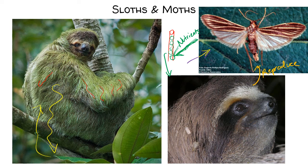The algae get nutrients from the sloth poop and dead moth bodies, the sloth gets nutrients from the algae, and the moth gets a place to reproduce. That sloth revisiting the same pile of poop gives it a continual new source of moths. So this is a weird tripartite symbiosis — maybe it is better for the sloth to risk its life once a week to maintain algae as a food source rather than just letting poop fall from the sky. What a weird situation.